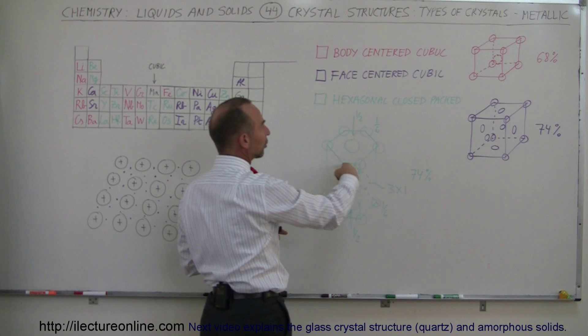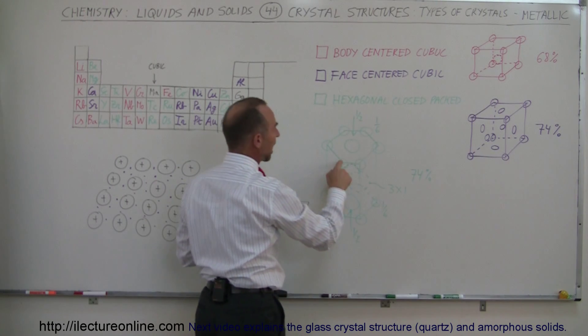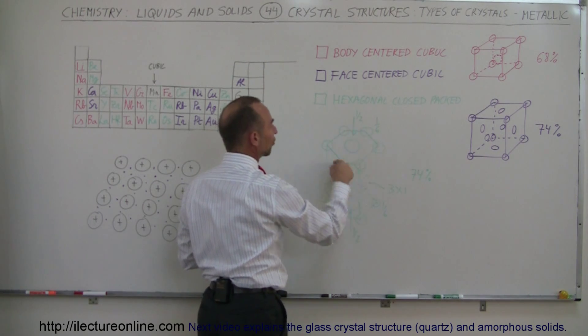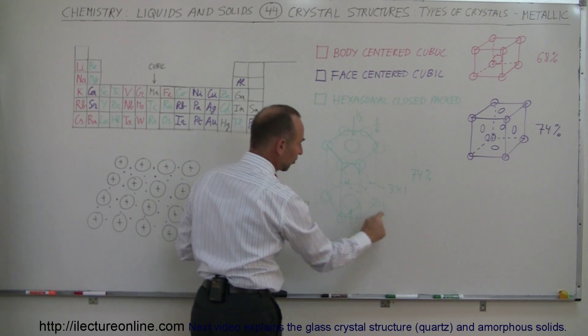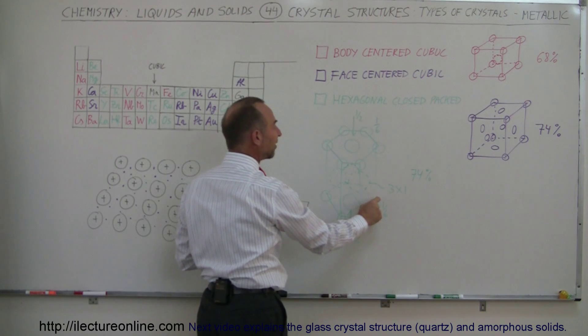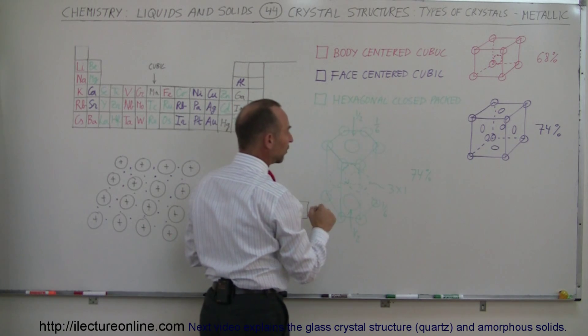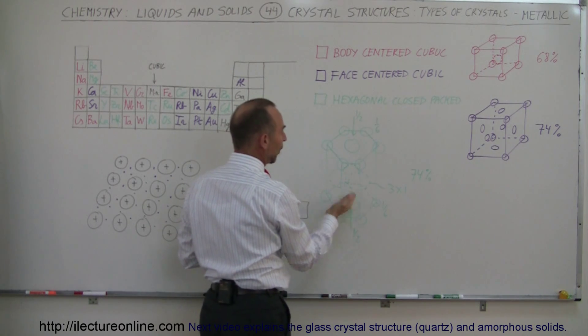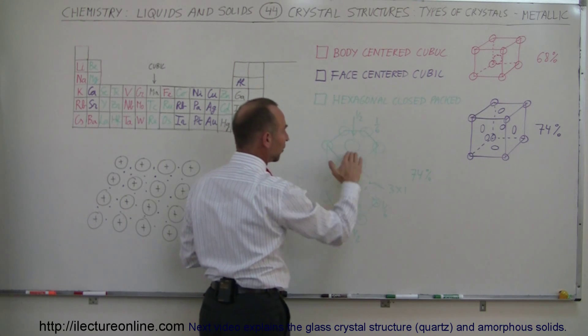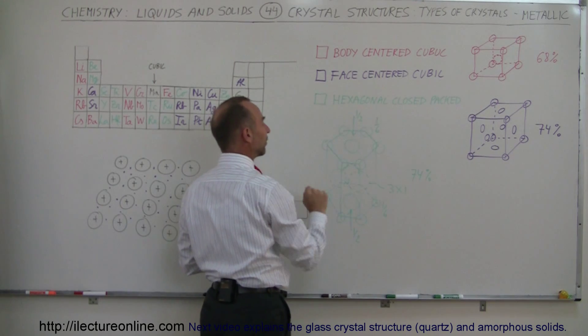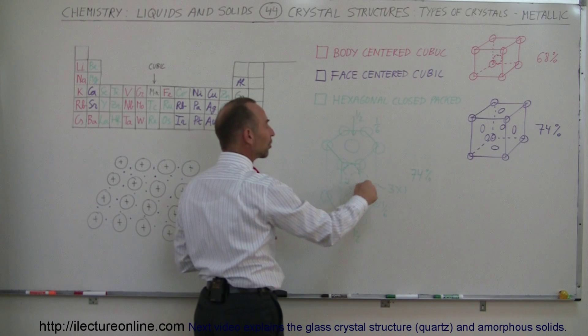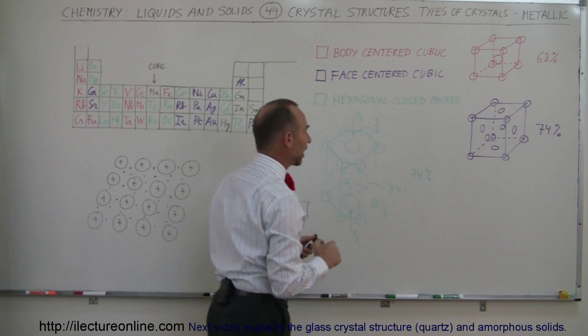And then we have what we call hexagonal close-packed structures, where you have an atom at each of the six corners here and each of the six corners below. Only one-sixth of each atom then belongs to this particular structure. We also have one at the top face, one at the bottom face, where half of it is in and half of it is out.